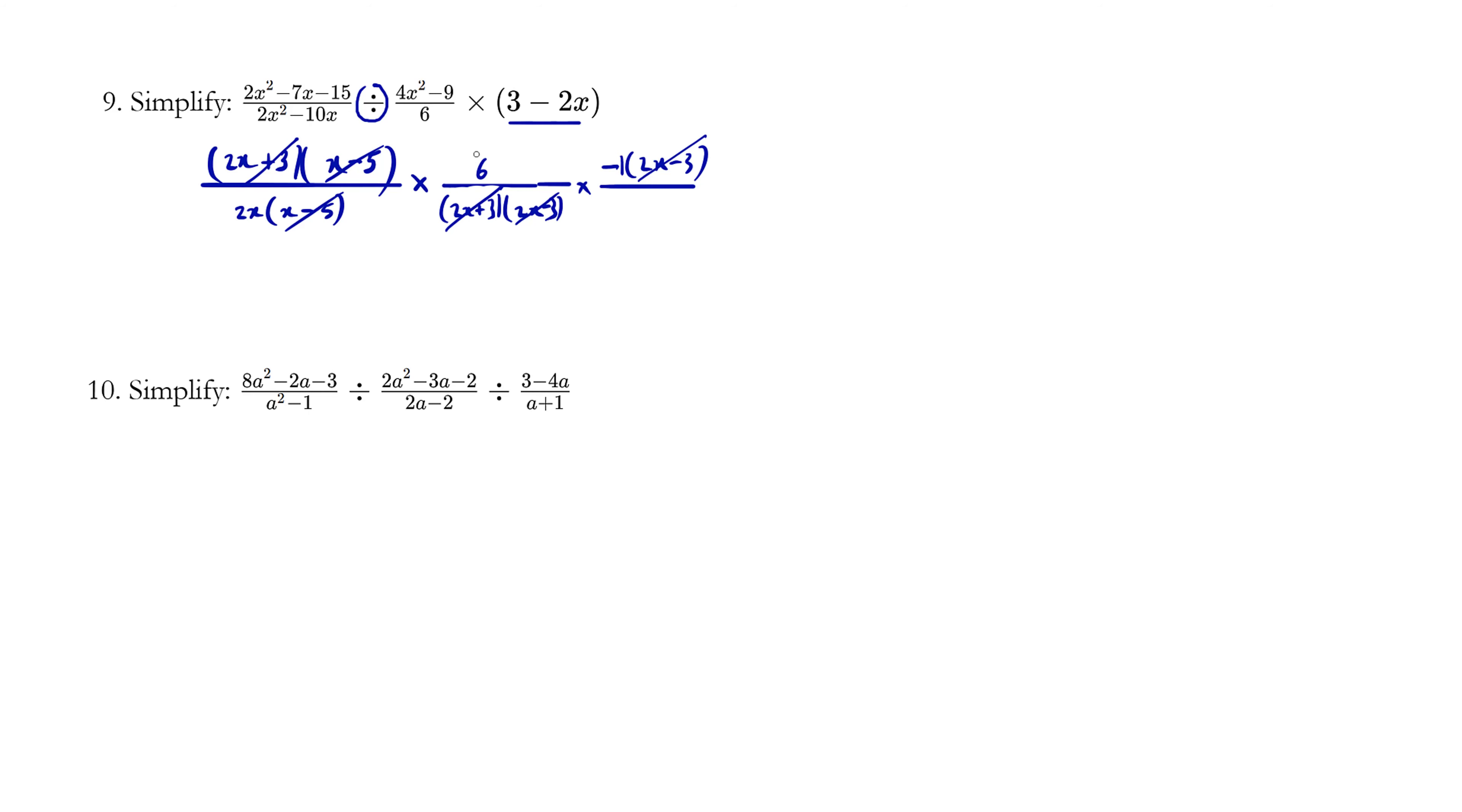And all we're left with is a six times negative one over two x. So this becomes negative six over two x, which is the same thing as negative three over x. Let's try the next question.